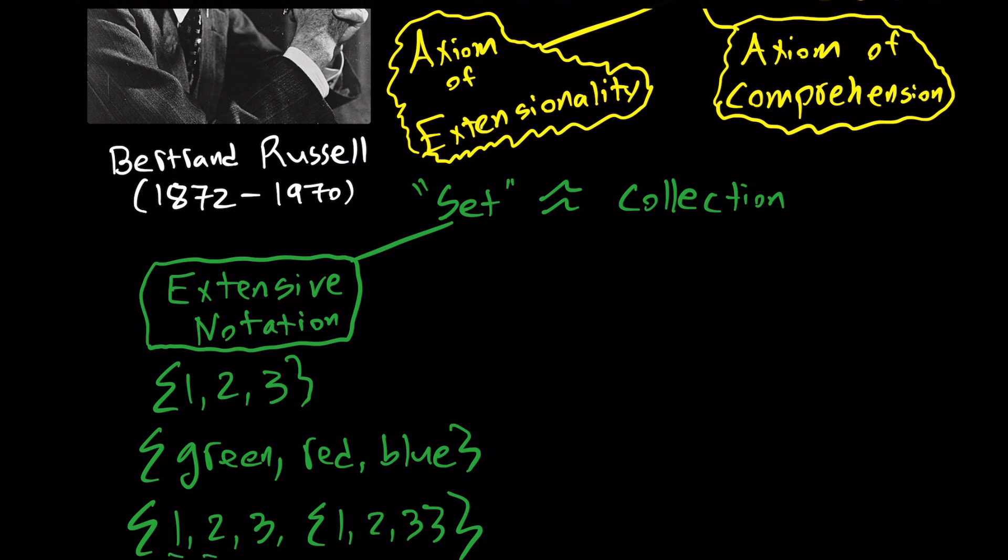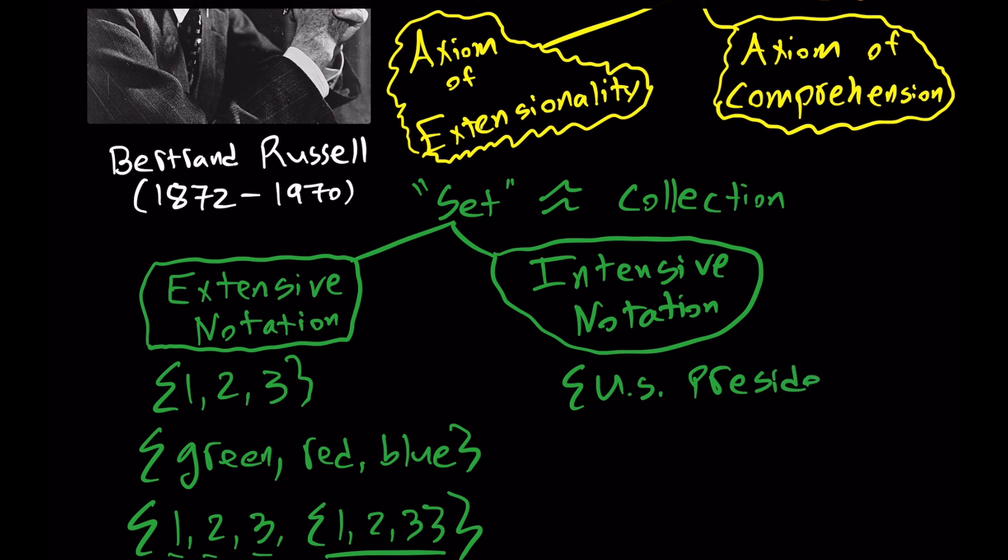We can also use intensive notation. Here, we're going to specify a universal general feature that all members have. For example, let's say we have the set of all U.S. presidents. Rather than listing them out one by one, we just say this set contains all U.S. presidents. To be sure, I'm using slightly more informal language here than a textbook might require. But for our purposes, this is okay.